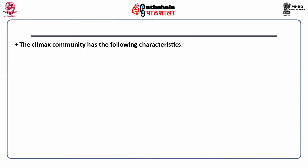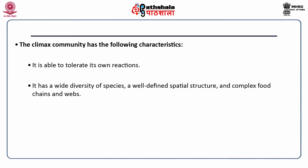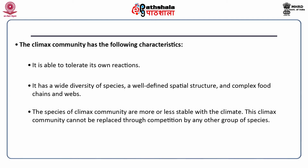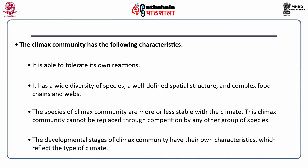The climax community has several specific characters. Climax community is able to tolerate its own reactions. It has a wide diversity of species, a well-defined spatial structure, and complex food chains and food webs. The species of climax community are more or less stable with the climate. This climax community cannot be replaced through competition by any other group of species. The developmental stages of the climax community have their own characteristics which reflect the type of climate.